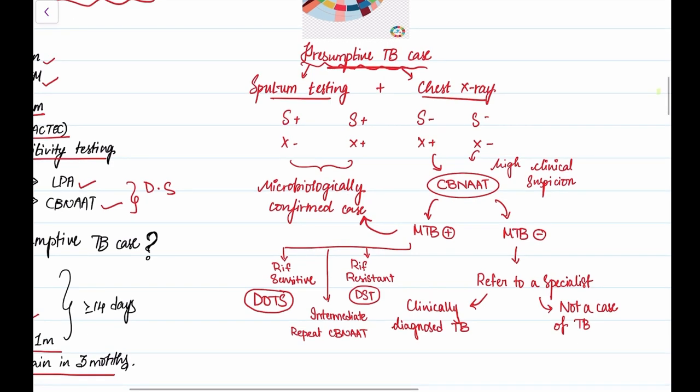The possibilities of getting the results is either sputum positive x-ray negative, sputum positive x-ray positive, sputum negative x-ray positive, or sputum negative and x-ray negative. The sputum positive cases are said to be microbiologically confirmed cases. Whereas in sputum negative but x-ray positive and sputum negative x-ray negative, if you have a high clinical suspicion with all the symptoms of presumptive TB, we send them for CB-NAAT.